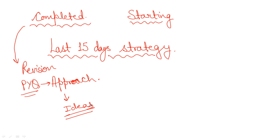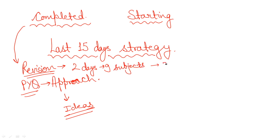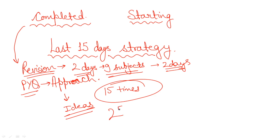On an everyday basis you need to revise all the subjects. If you can't do revision of all subjects every day, then on alternate days you should try — meaning within two days you need to complete revision of all nine subjects once. Then the next two days, again all nine subjects. You should keep on doing revision — if possible 15 to 25 times depending on how much time you have.